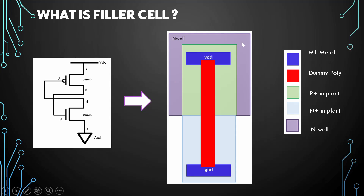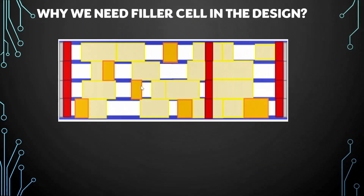The question is: why do we need this filler cell which has no input, no output, and has no functionality to perform? Let's assume this is a design which has completed placement. This is how the placement of standard cells looks like — there are some gaps in between the standard cell placements.